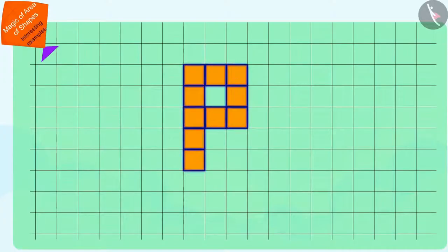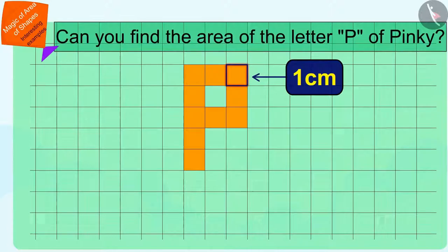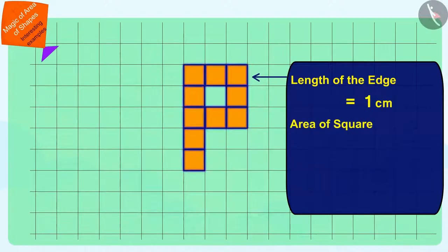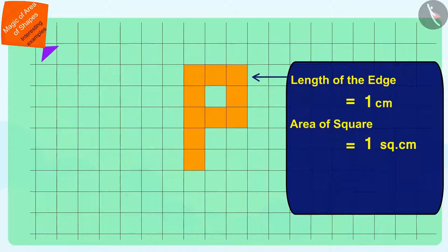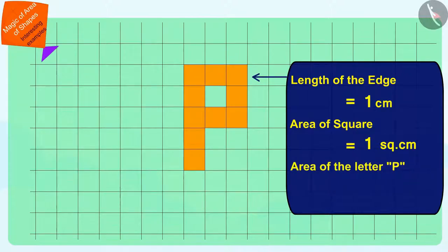Children, if the side of every square-shaped sticker used by Pinky is 1 cm, can you find the area of the letter P of Pinky? The length of the edge of each square-shaped sticker is 1 cm, so the area of each square-shaped sticker will be 1 cm². Pinky has used 10 such stickers in her name letter P. Therefore, the area of the letter P will be 1 times 10, which is 10 cm².